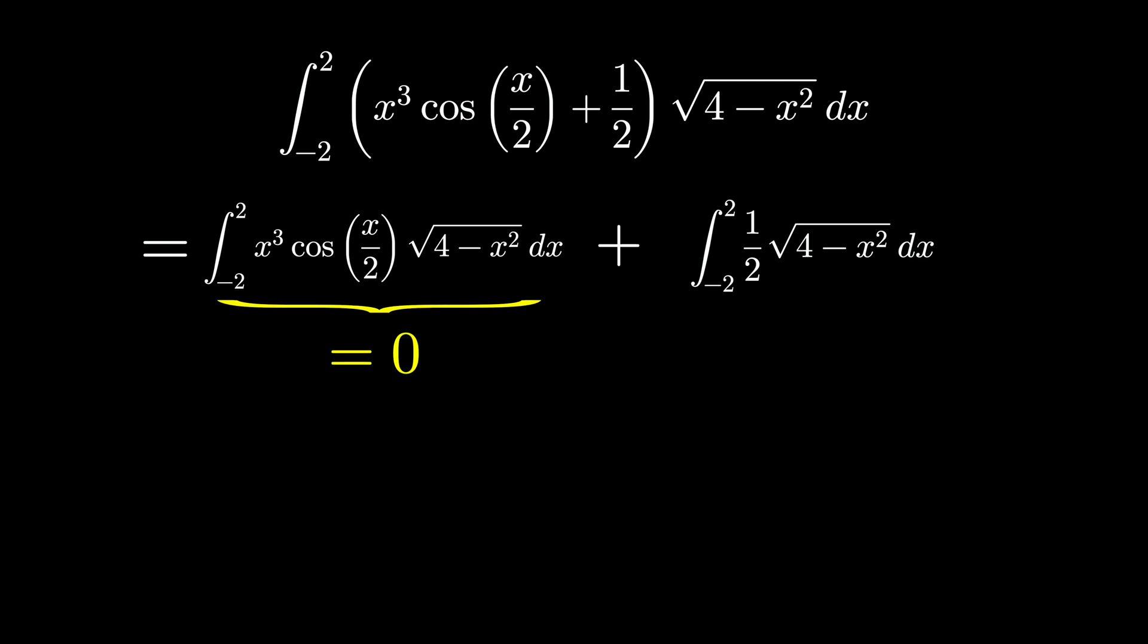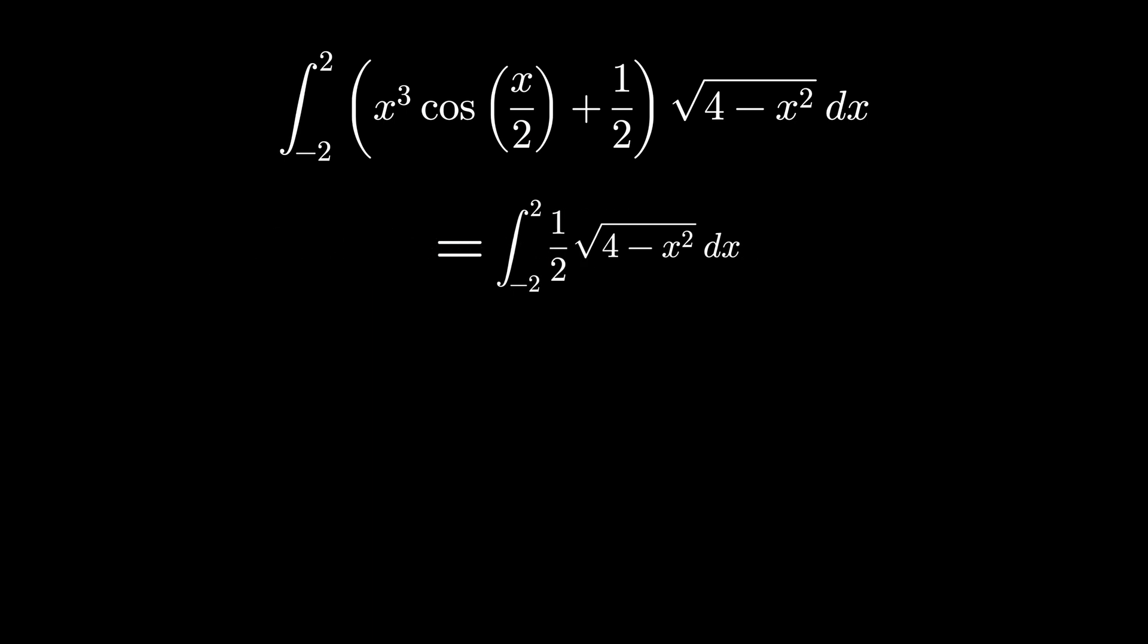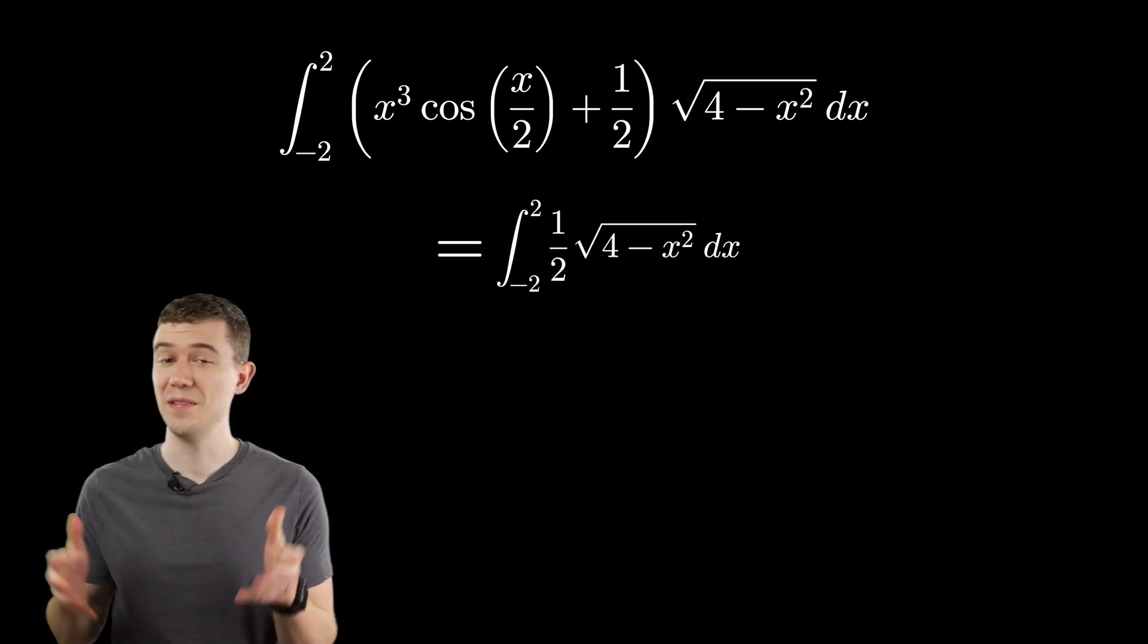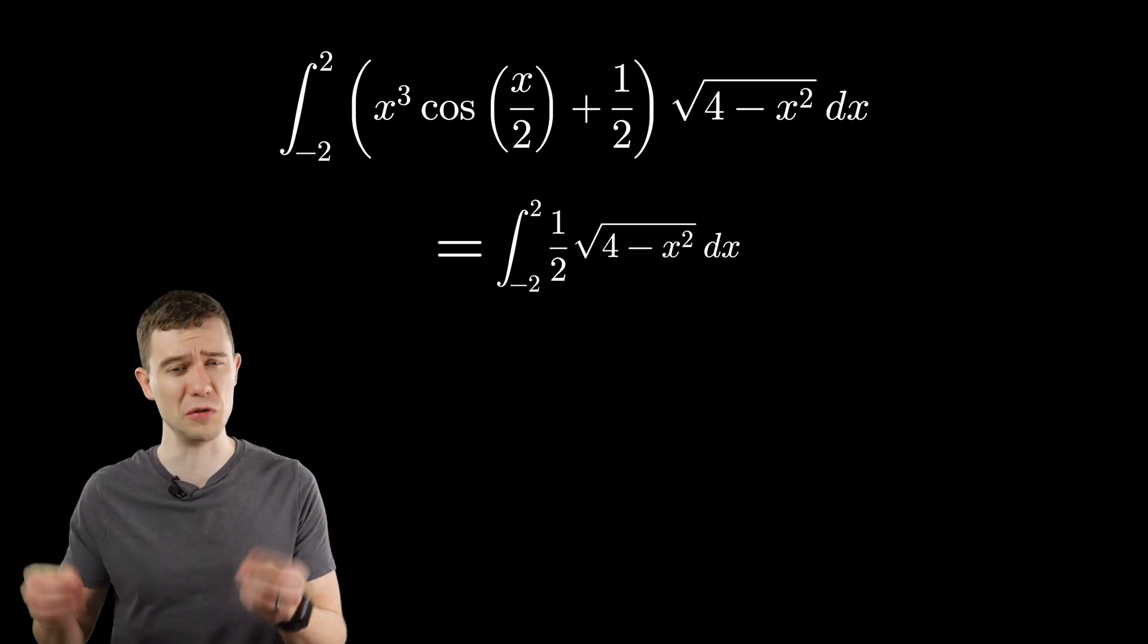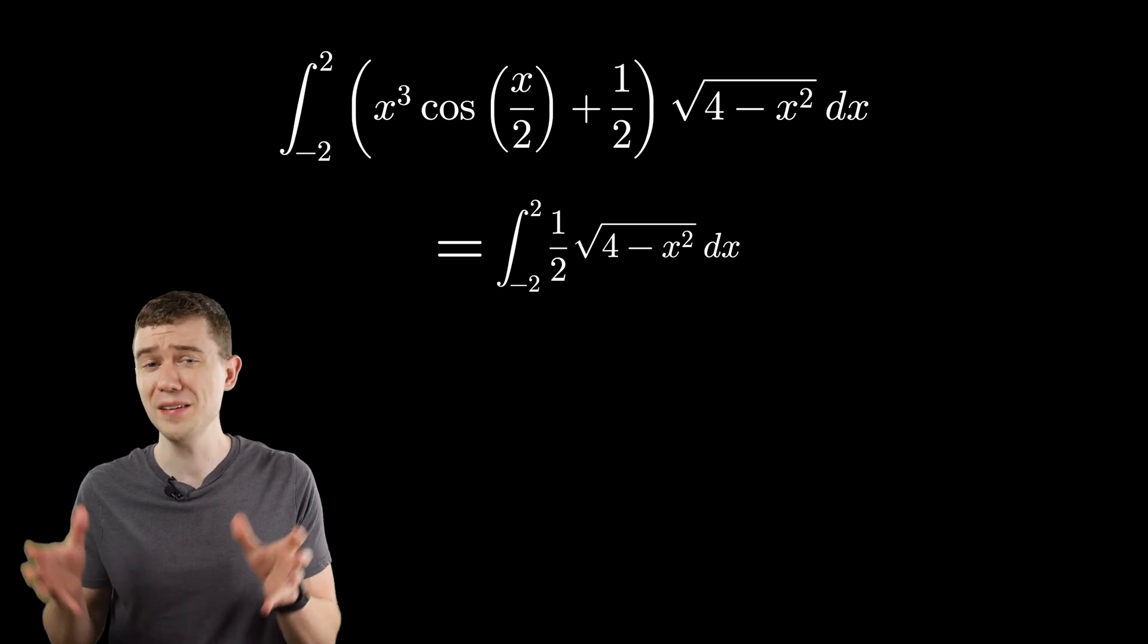All we have to figure out is the part of the integral that's just one half square root of 4 minus x squared. Now, this isn't an odd function, so we can't use the same trick, and you might think we have to actually do some calculus here, but no.